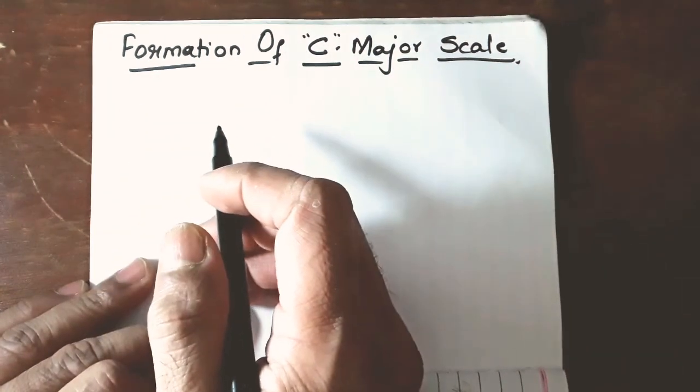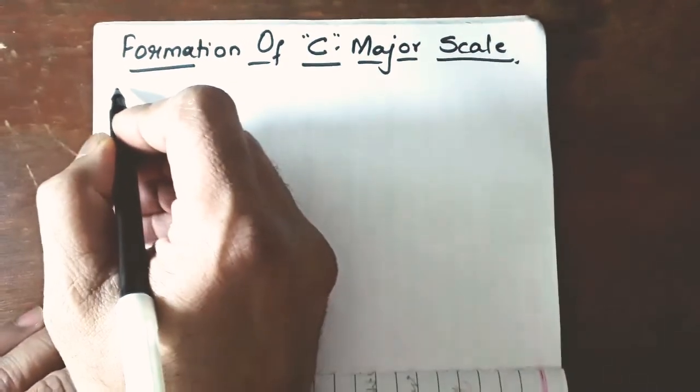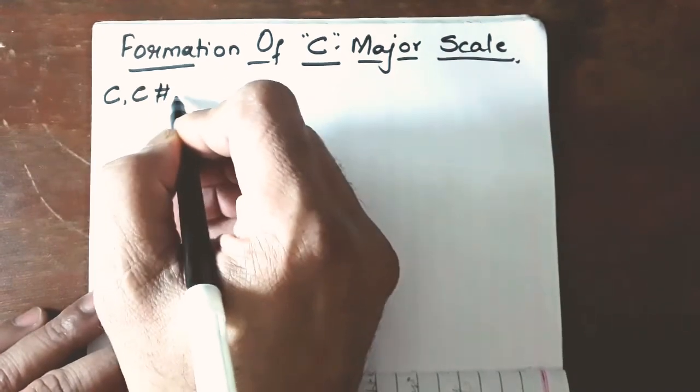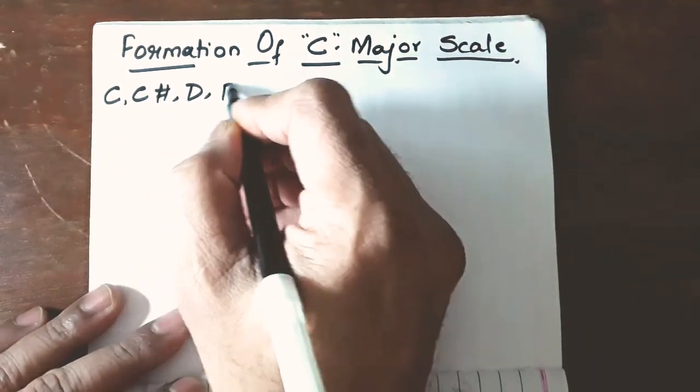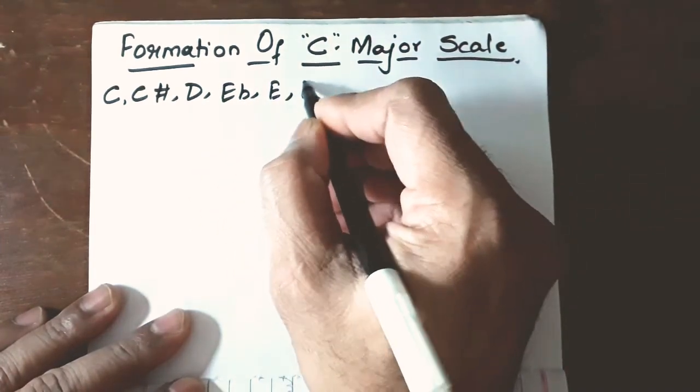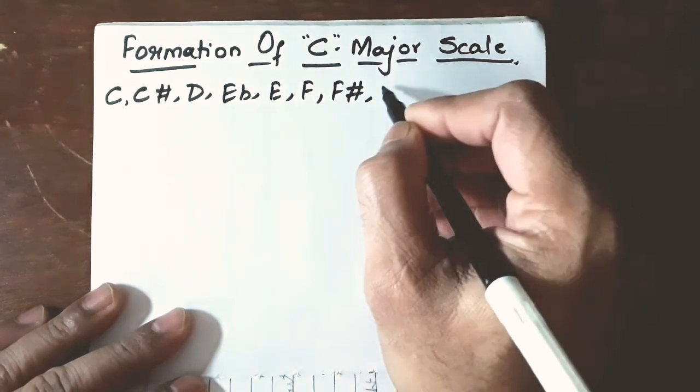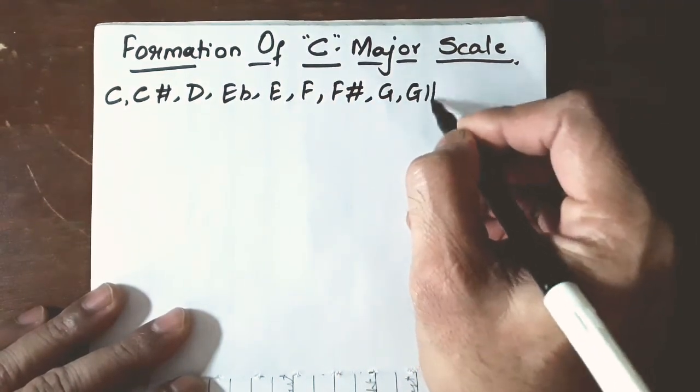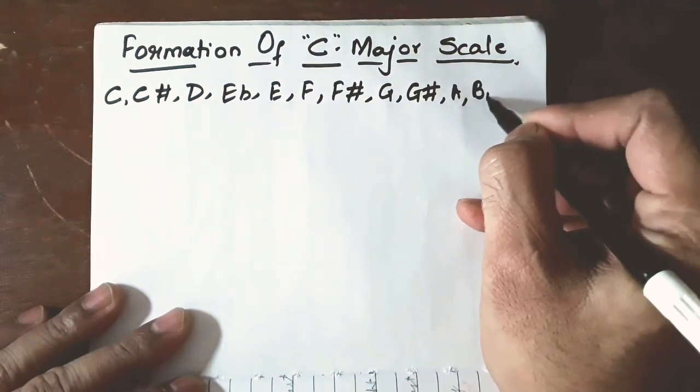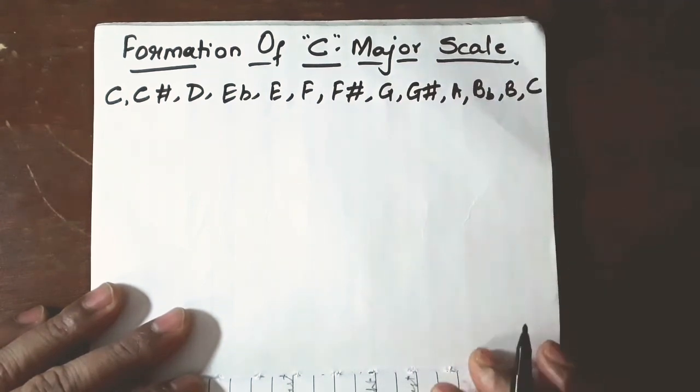So, first let us write down the chromatic scale of C. This starts with C, C sharp, D, E flat, E, F, F sharp, G, G sharp, A, B flat, B and C finally.